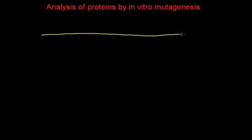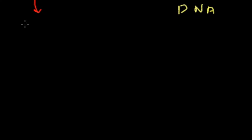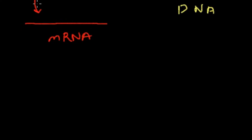Let me show here a brief reminder of how expression of the gene works. Let's say that this is a DNA strand and somewhere on it is a gene. First, RNA is made — this is messenger RNA — that is going to be complementary to the DNA, but instead of thymine, this is going to be uracil. And this is transcription.